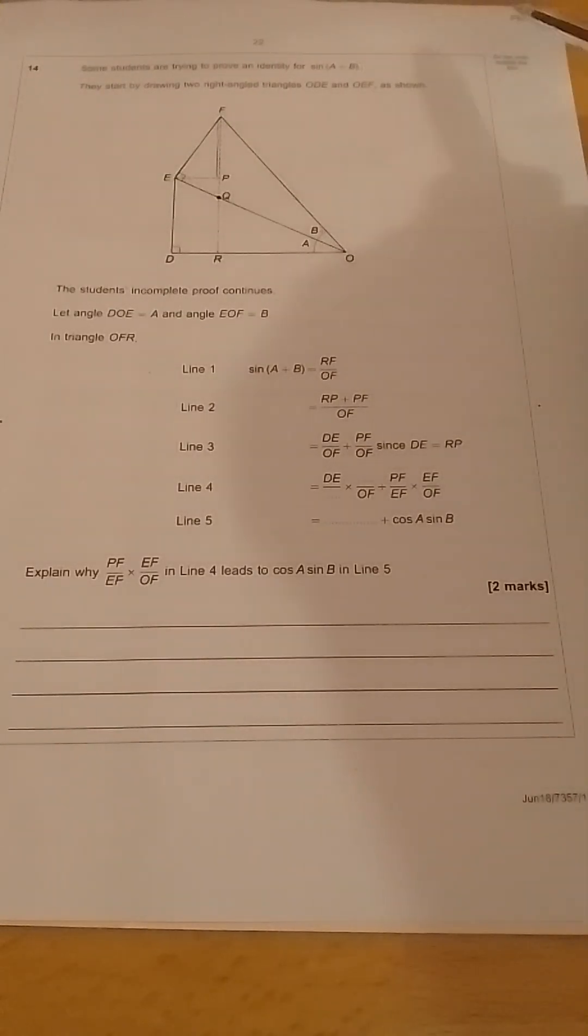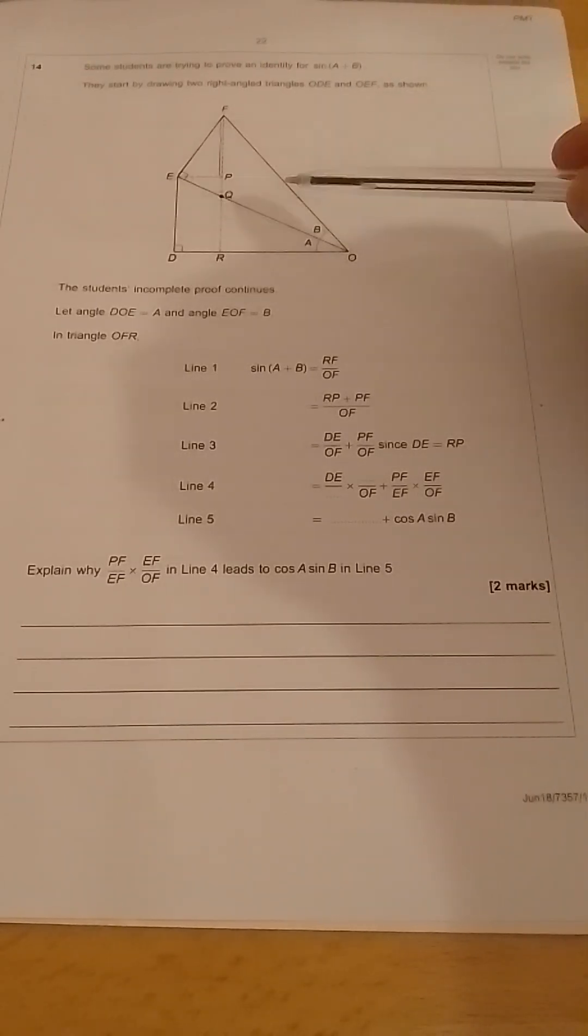Some students are trying to prove an identity for sin(A + B). They start by drawing two right-angled triangles ODE, which is the bottom triangle, and OEF, which is the top triangle, and the student's incomplete proof continues. They let angle DOE be A and angle EOF be B, and then they have various steps of an incomplete proof. You can read them out yourself.